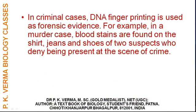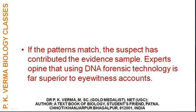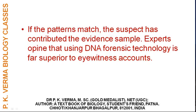In cases of riots, earthquakes, and terrorist attacks — such as the attack on the WTC — bodies become badly demolished, and the DNA of the deceased can be compared with their parents' or siblings' DNA to establish relationship. In criminal cases, DNA fingerprinting is used as forensic evidence. For example, in a murder case, blood stains are found on the shirt, jeans, and shoes of two suspects who deny being present at the scene. DNA fingerprints of the blood samples from the clothing of these suspects are compared with the sample of the victim. Experts opine that using DNA forensic technology is far superior to eyewitness accounts.